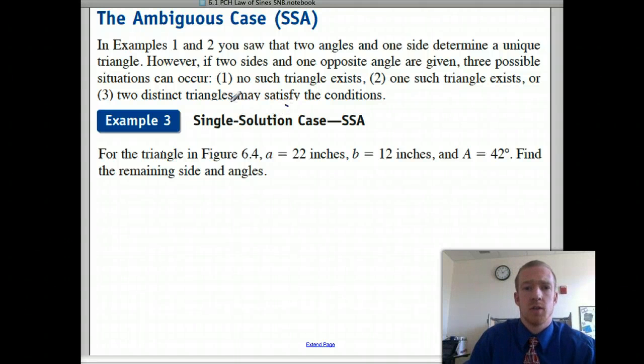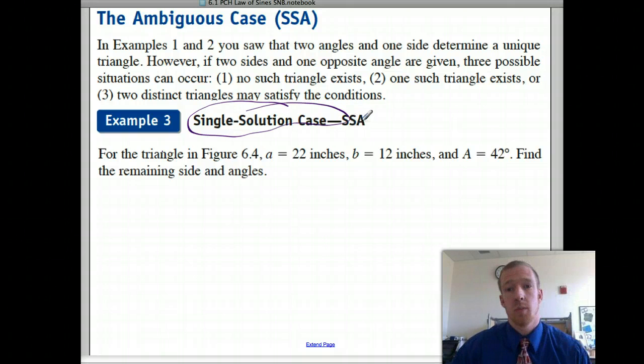Alright, so here's the single case solution for the ambiguous case when they give us two sides and an opposite angle. That's not SAS, that's different. We're going to use law of sines for this one.